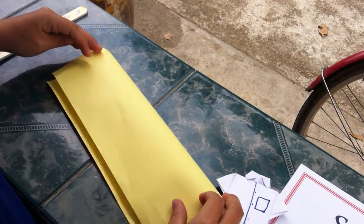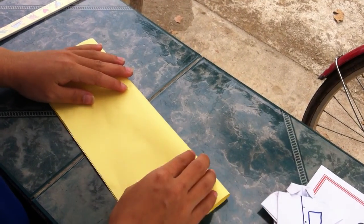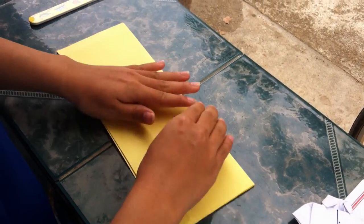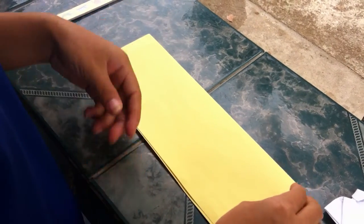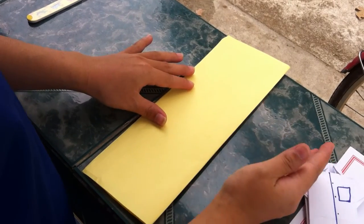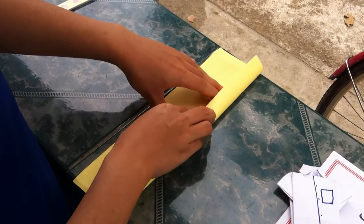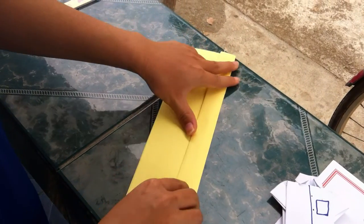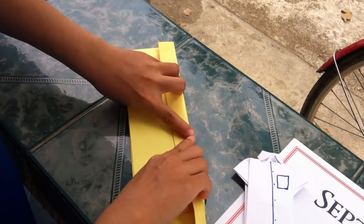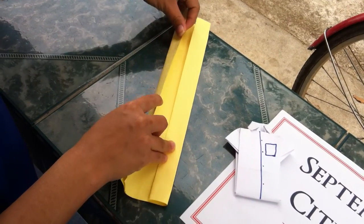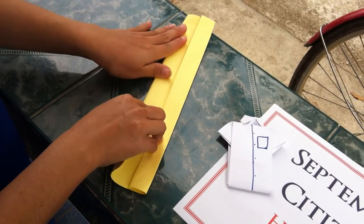Firstly, fold the paper in half in two. And then the next step, fold the right, fold half of the right of the side. And then fold the left of the side.